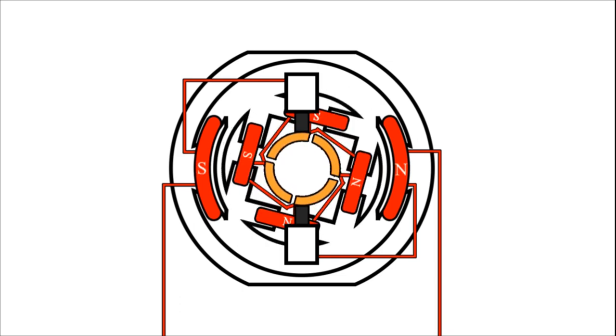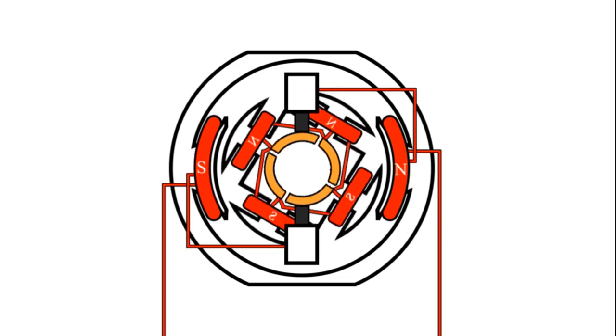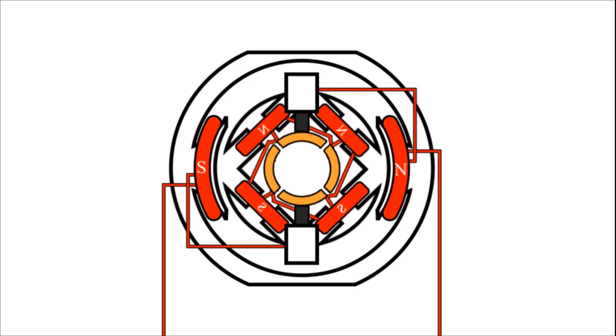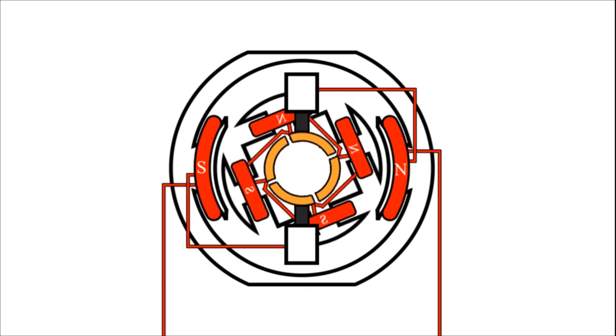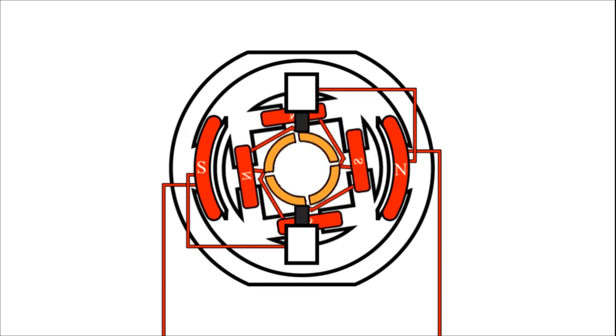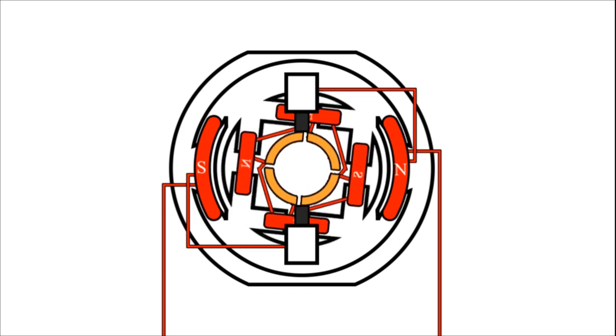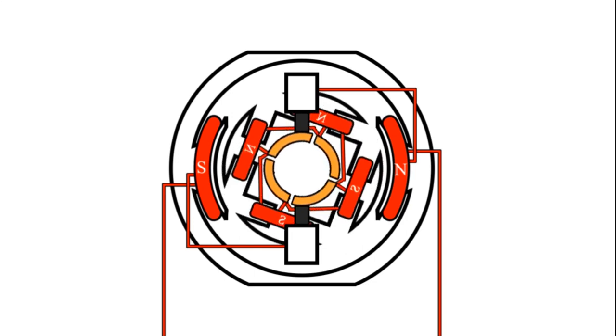However, if we do change the connection of the carbon brush, the direction of the current changes only in the armature coils, while the field coils polarity remains the same. This then will reverse the spin of the armature.